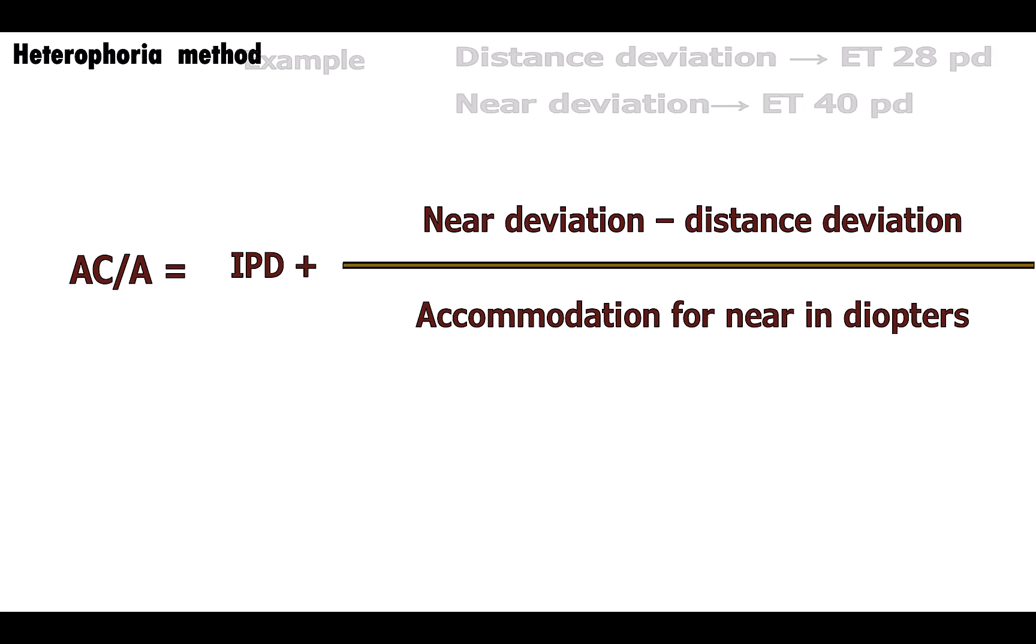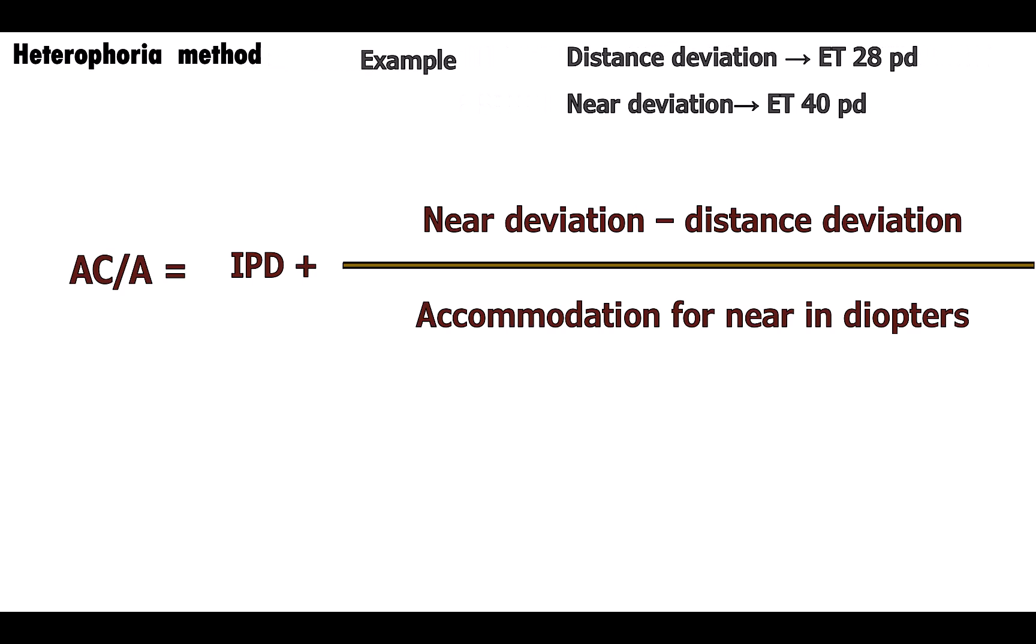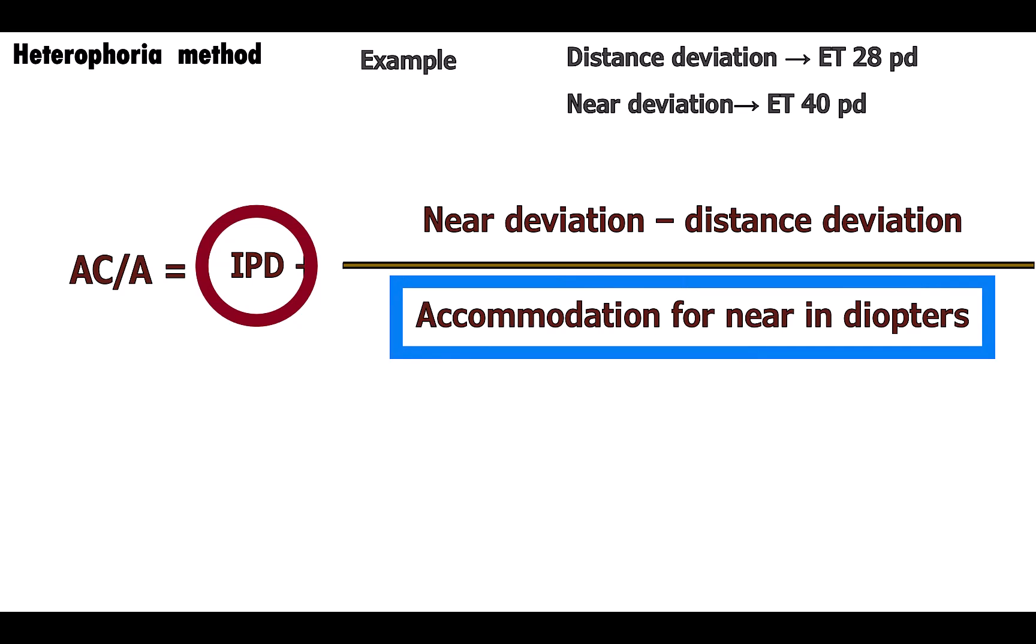Let's see this with an example. Before we start calculating, we should take an average IPD of 6 centimeters for this example. Also, let's first see how to determine the accommodation.